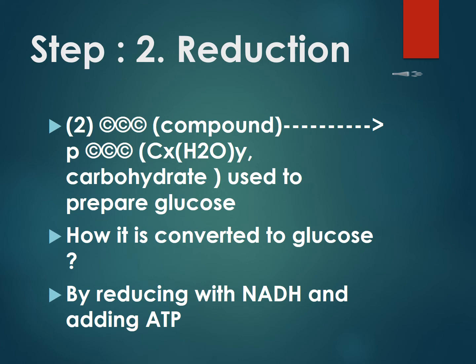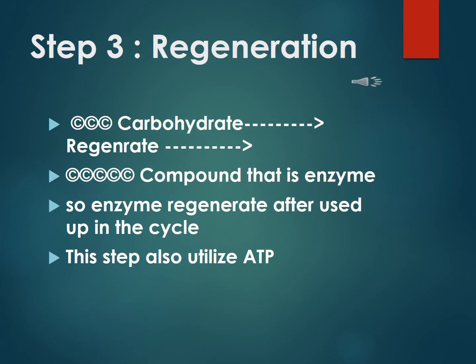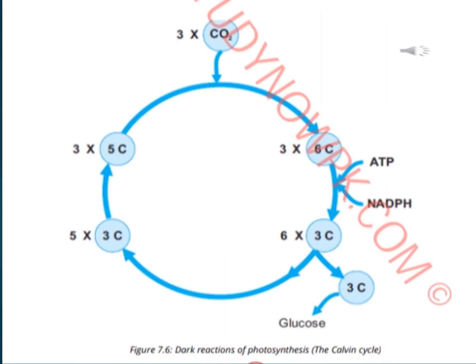The last and third step is regeneration — regeneration of the enzyme. The three-carbon carbohydrate goes on to regenerate the five-carbon compound enzyme. So the enzyme is regenerated after being used up in the cycle. This step also utilizes ATP. Here is the diagrammatic representation of the dark reaction of photosynthesis — the Calvin cycle.